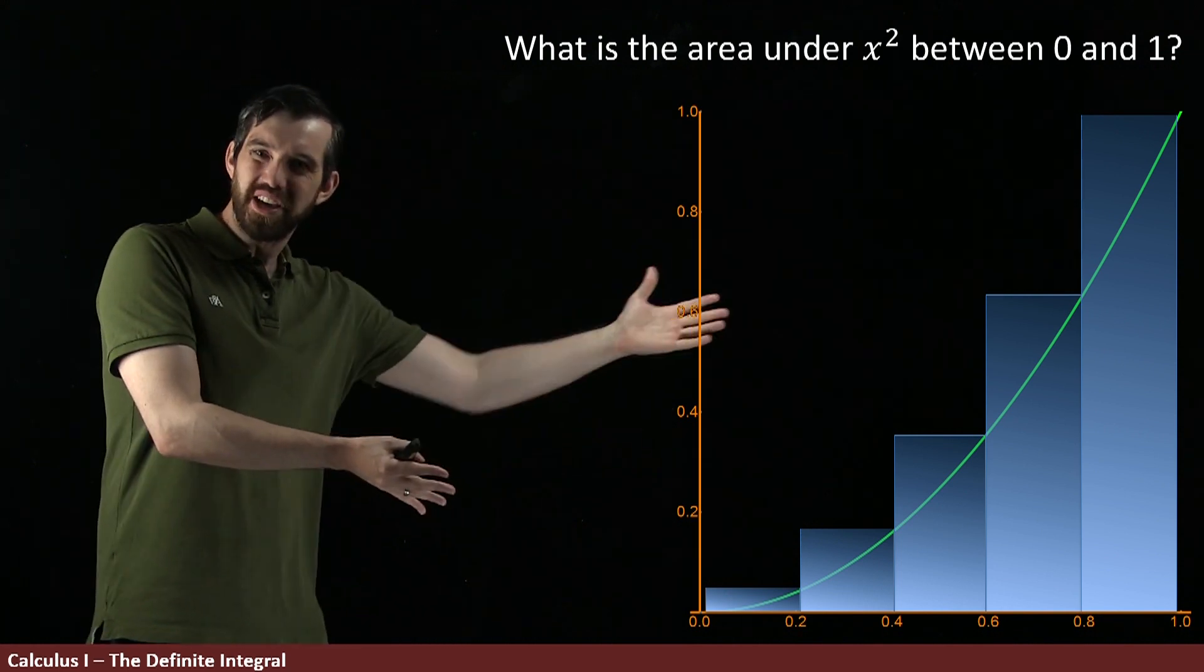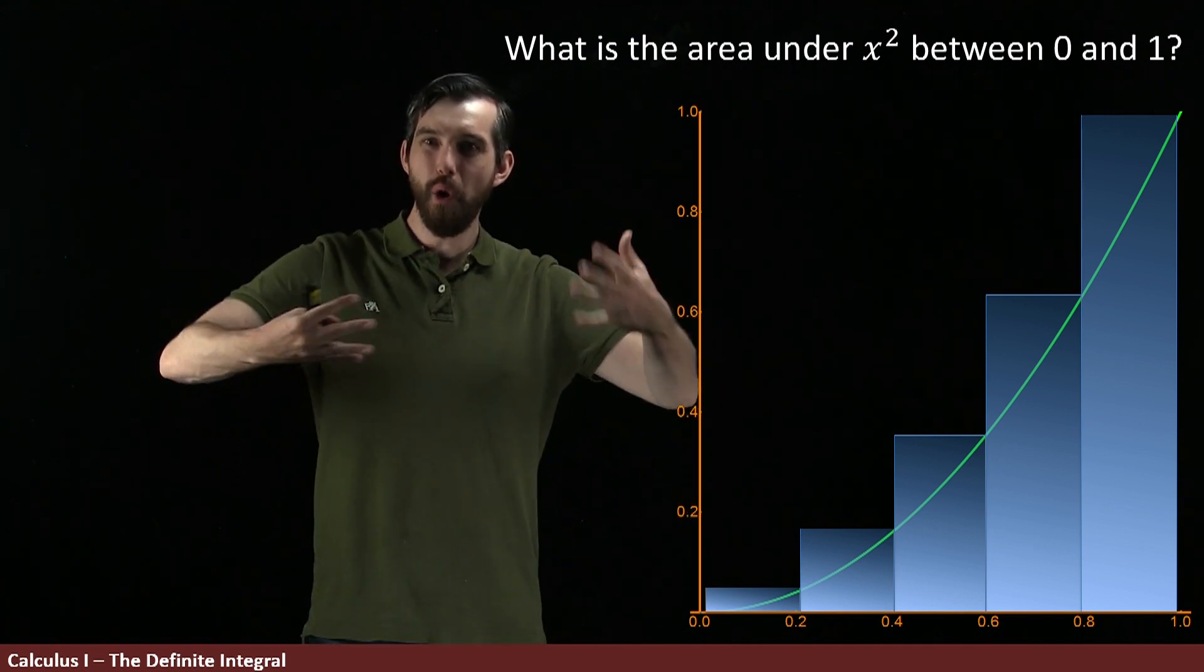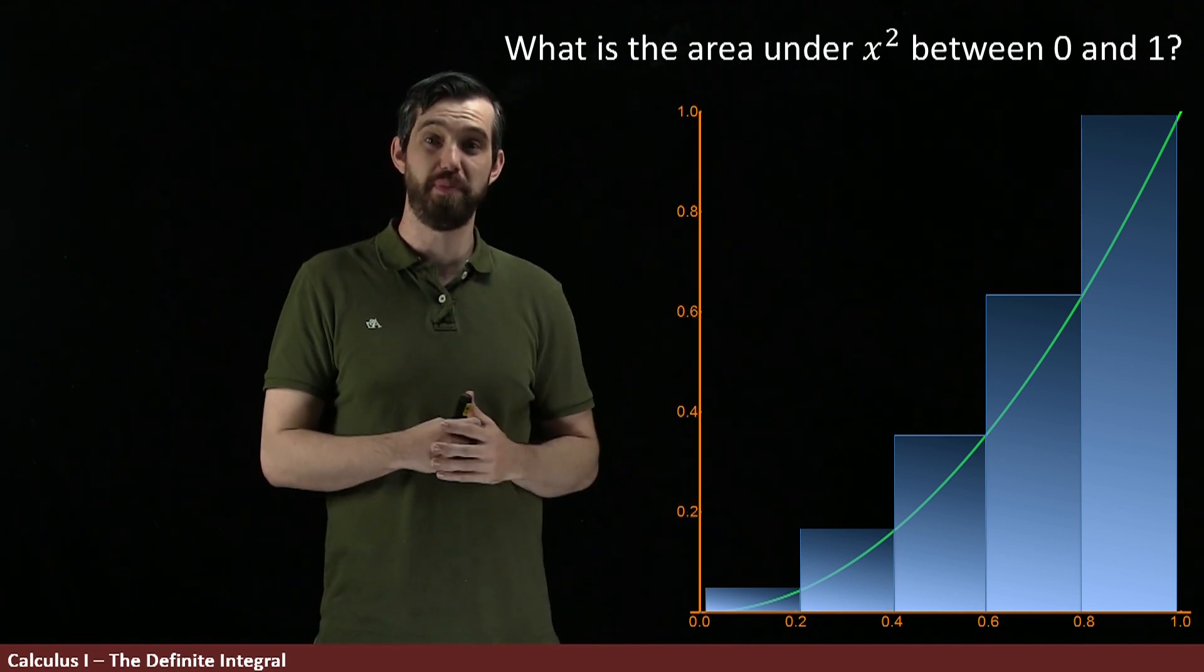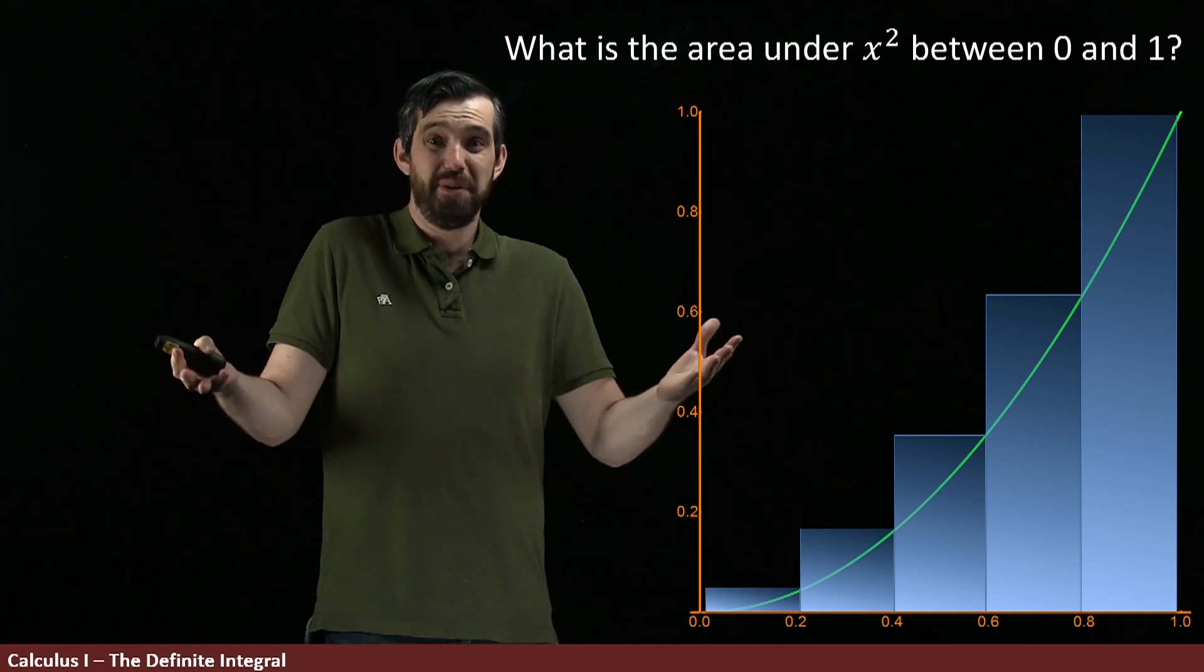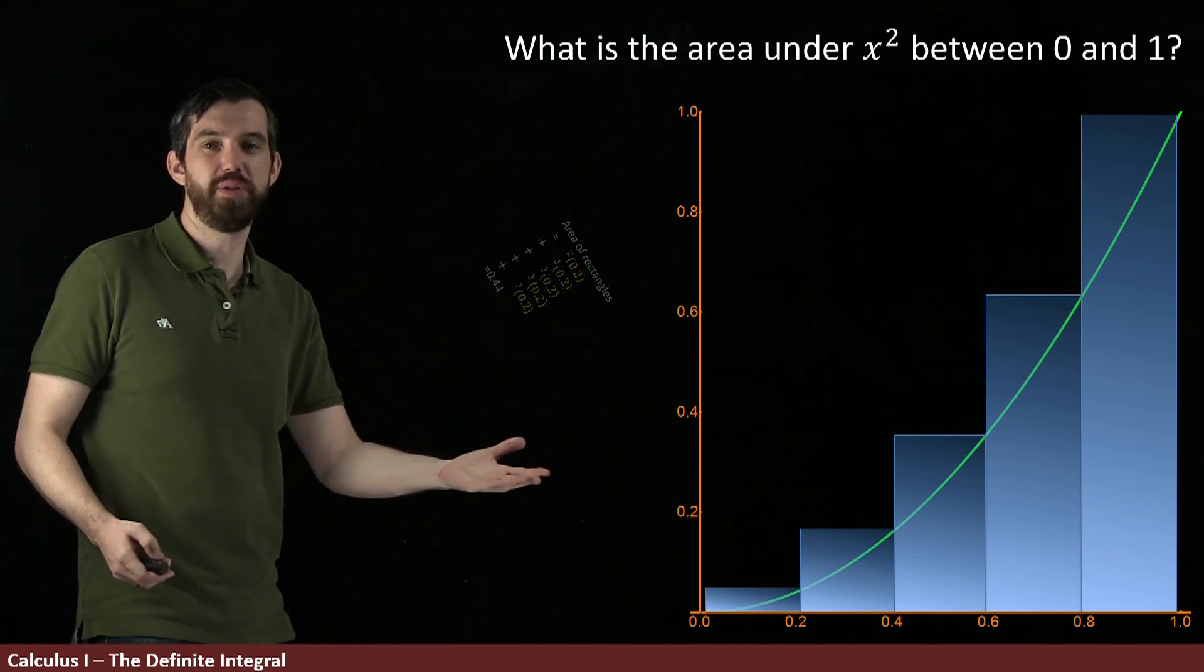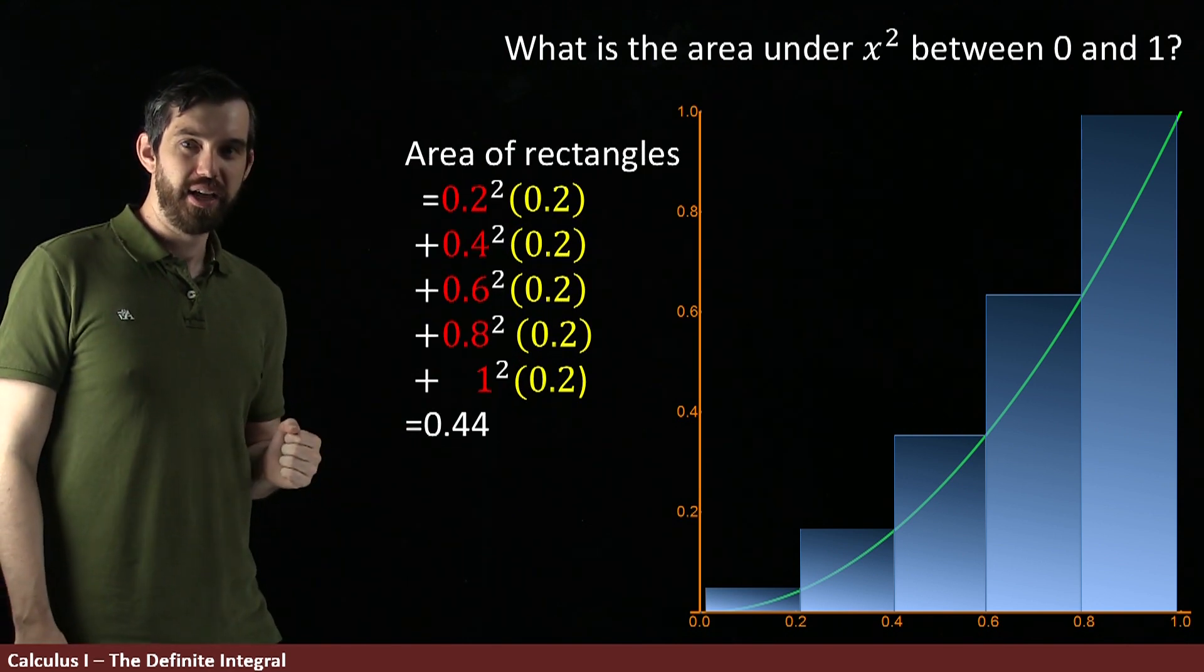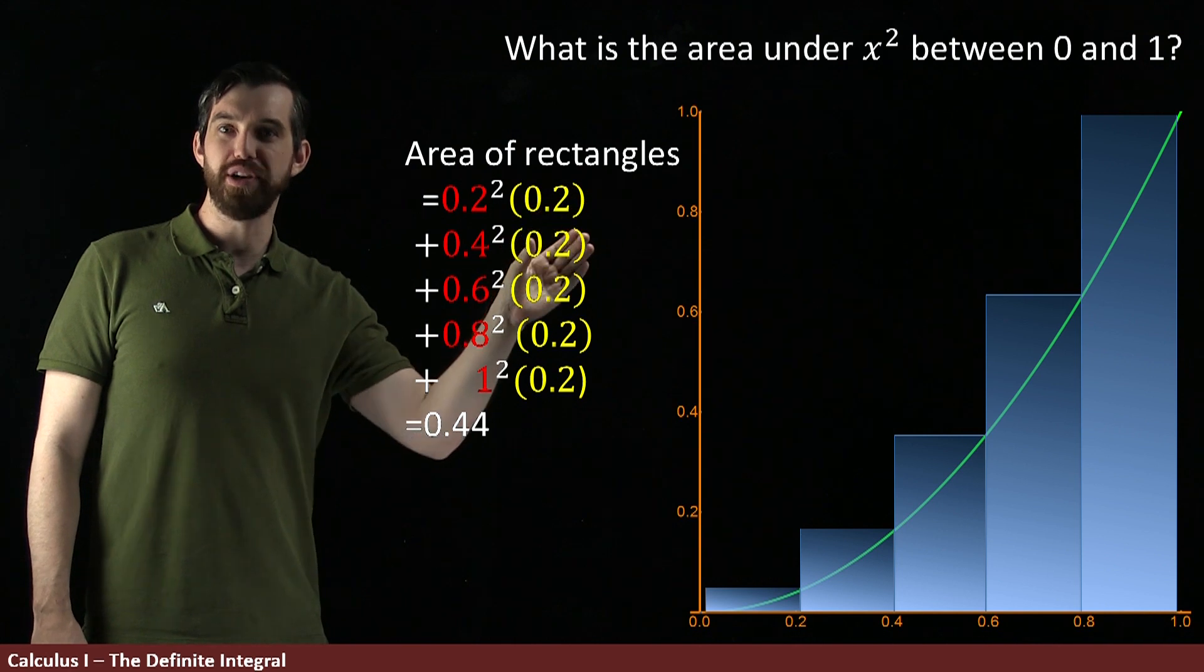So what if I compute the area of these rectangles? As we can see, it'll be a little bit more—it will be an overestimate to the area under the particular curve of x squared, but it's not completely terrible. And indeed, if I want to do it numerically, they're just rectangles so I should be able to add them up pretty quickly.